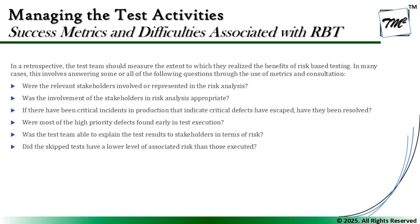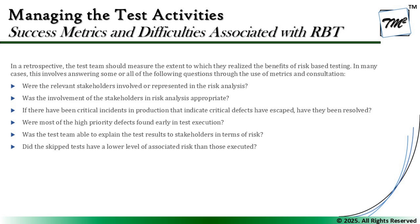Question two: was the involvement of stakeholders in risk analysis appropriate? Question three: have there been critical incidents in production — critical defects that escaped — and were they resolved? No matter how much we try, things will escape to production, but the key question is: have we addressed every open item or are things still unresolved?